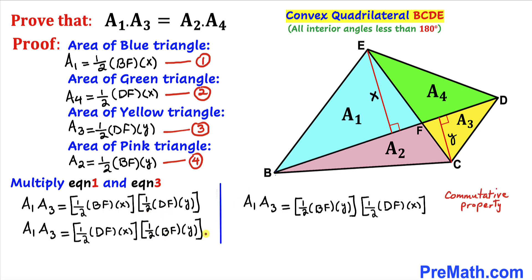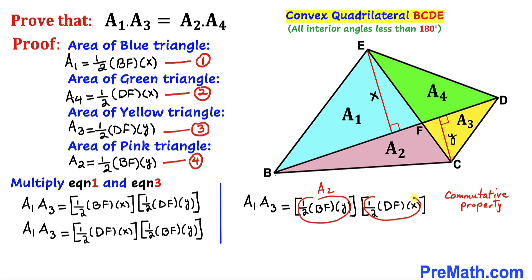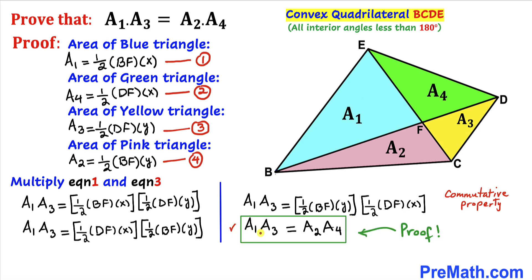Using the commutative property, I switch their positions. This part now represents equation four, which is A sub 2, and this part represents equation two, which is A sub 4. So therefore the right hand side becomes A sub 2 times A sub 4, and we have proven that A sub 1 times A sub 3 equals A sub 2 times A sub 4.